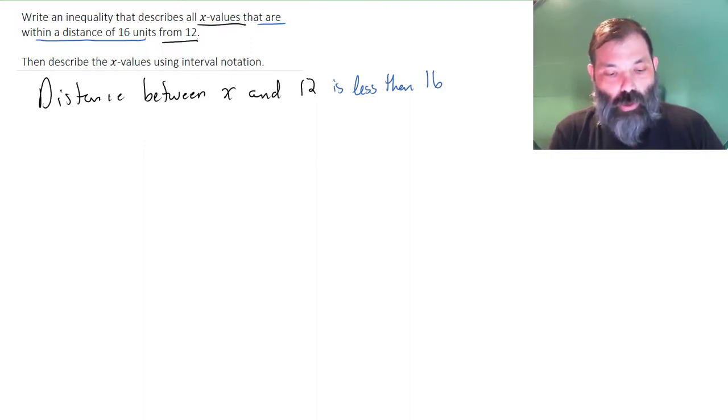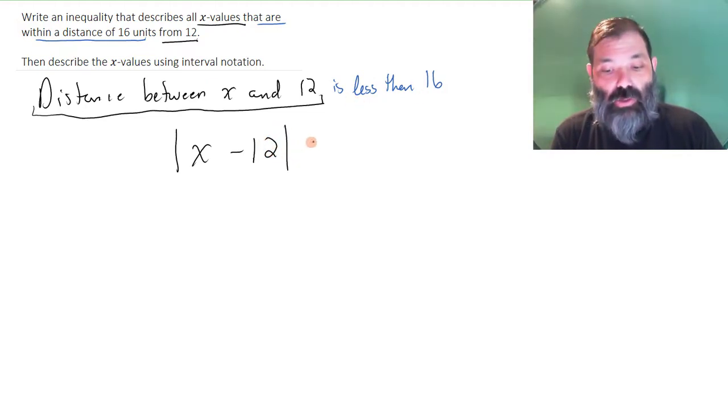Now I know that to find the distance between two numbers, I can use an absolute value statement. So the distance between x and 12 is the absolute value of x minus 12, and I need that to be less than 16. Here is an inequality that can be used to describe that statement.